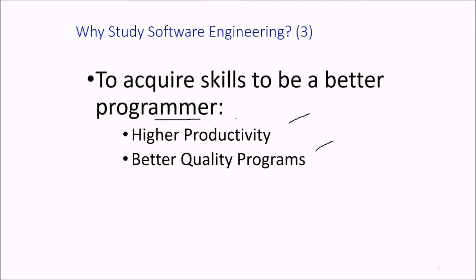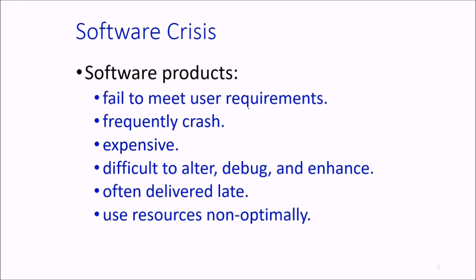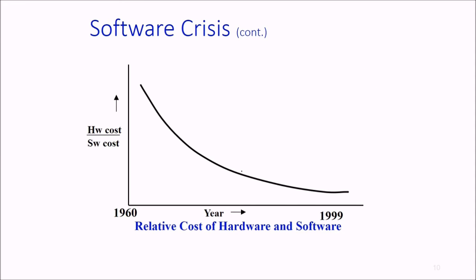What is software crisis? The word is quite harsh. Software products often fail to meet user requirements. They crash, are expensive, difficult to alter, debug, and enhance. This chart shows hardware and software costs. You can witness that in 1960 it was in this range, and over time hardware costs have gone down significantly.